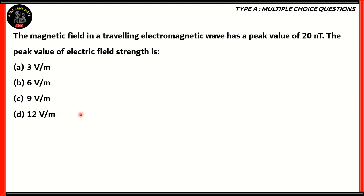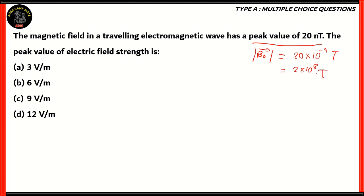How do we solve this? Well, we know that the magnetic field has a peak value of 20 nanotesla. That means the modulus of the magnetic field vector at its maximum is 20 × 10⁻⁹ tesla, which we can write as 2 × 10⁻⁸ tesla. So we found out the value of the magnetic field from the question. How do we find out the value of the electric field?